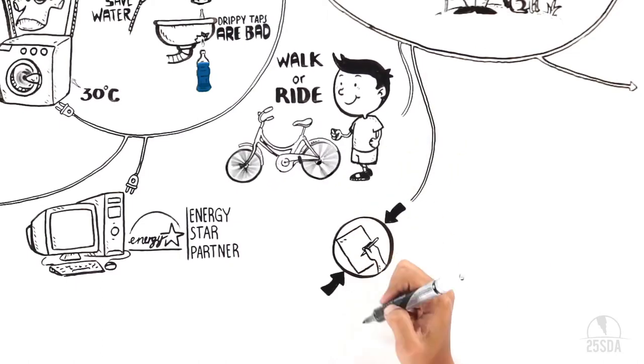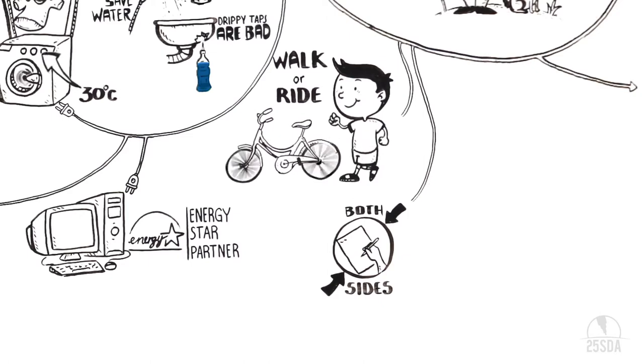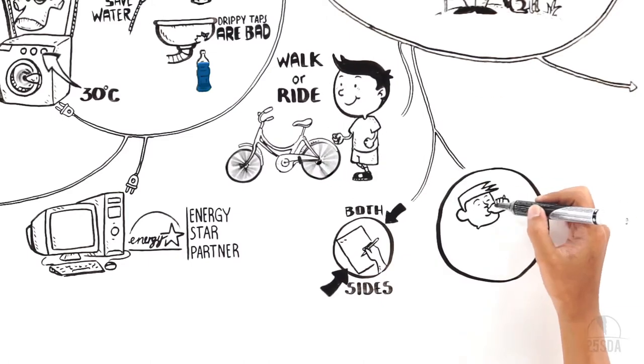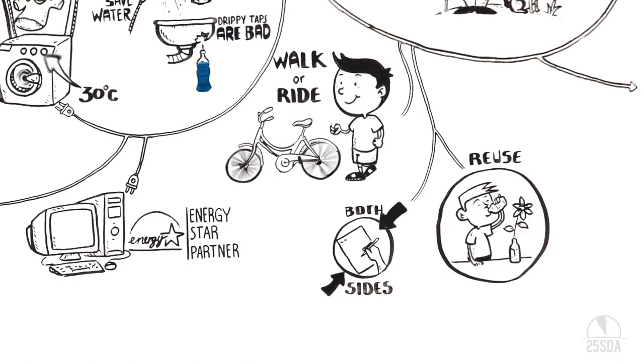Being energy smart means doing little things. Little things that are important, like using both sides of a piece of paper. And if you can reuse something, instead of throwing it away, please do.